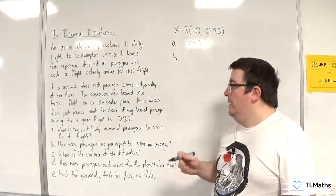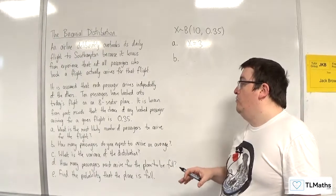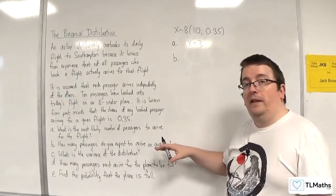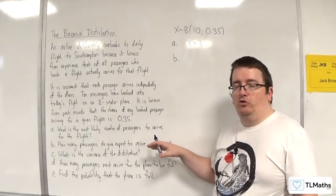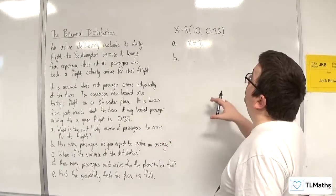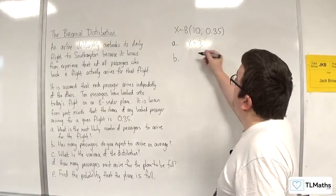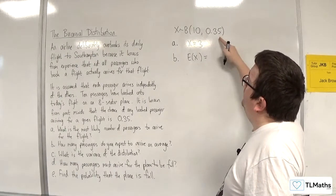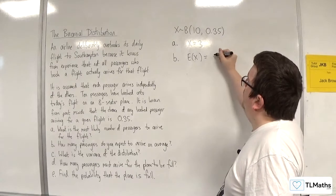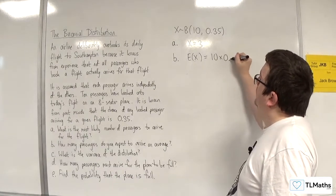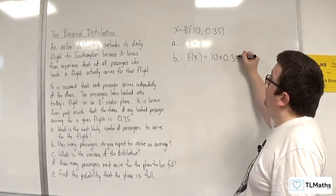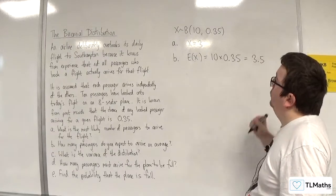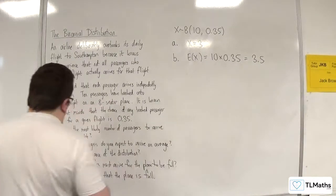Part B: how many passengers do you expect to arrive on average? That is the mean of the distribution, or E(X), the expected value. E(X) is n times p, which is 10 times 0.35. That's in the formula booklet. So 3.5 is what you would expect on average.